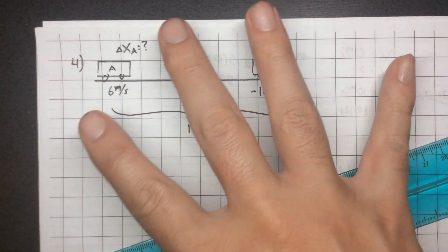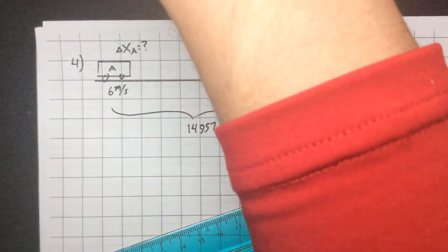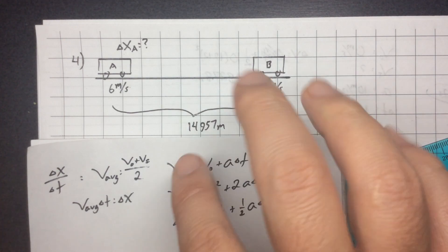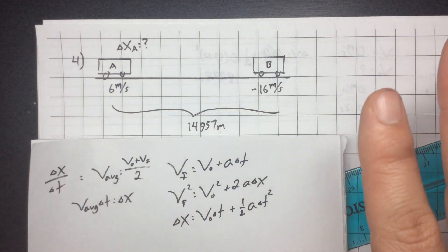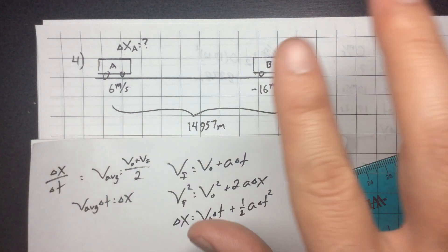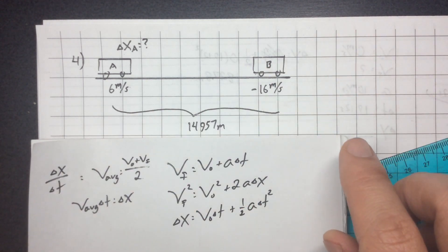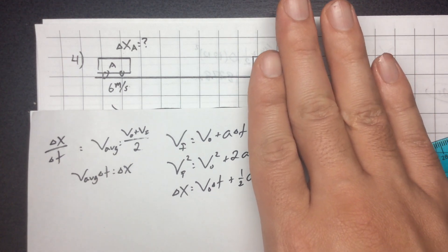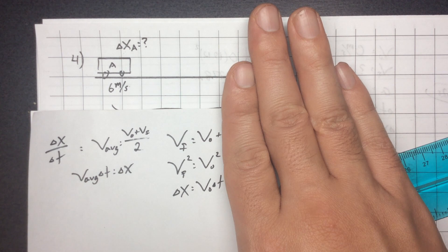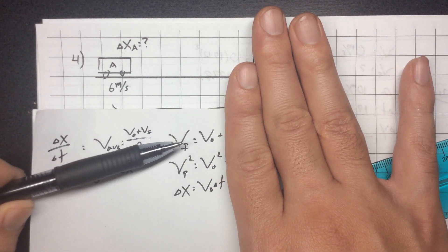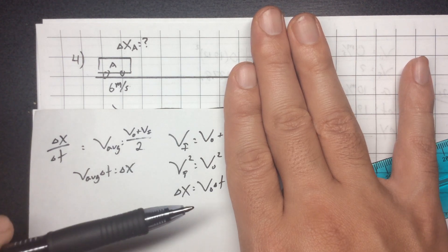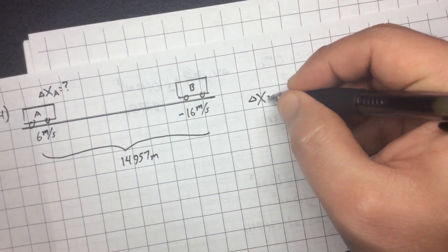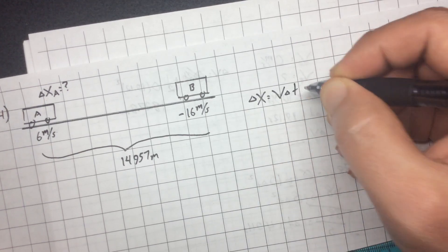How do you approach this problem? The way you approach it is: make a list of stuff — these five things. The acceleration is nothing for either car. If acceleration is zero, the third equation simplifies nicely. The change in position of either car equals the velocity of that car times the time we're allowing it to move. You can do it with math or with graphing.